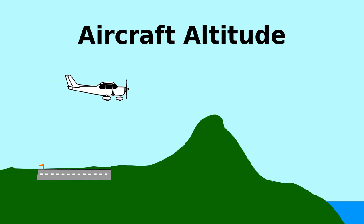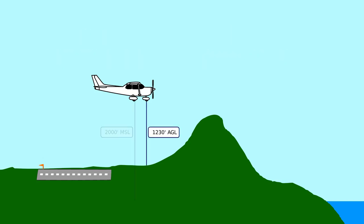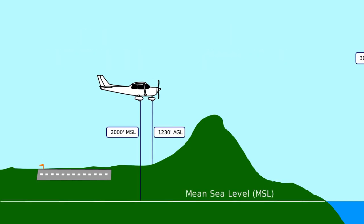The height of an aircraft in space can be described in two ways: AGL and MSL. AGL means altitude above the ground, and MSL is altitude above mean sea level.